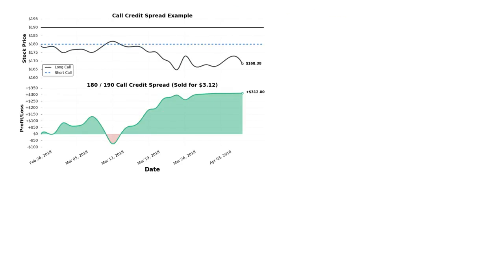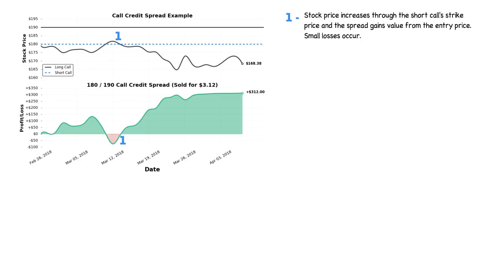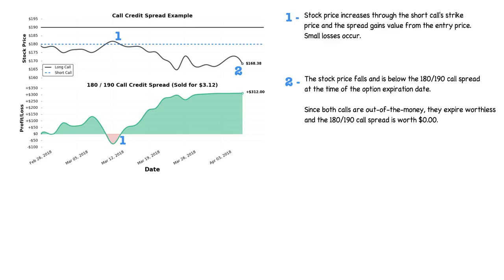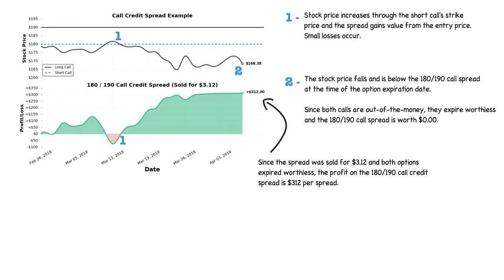Let's look at how this position performed over time. On the top part of the chart, we see the changes in stock price relative to the call credit spread's strike prices, and on the bottom, we see the corresponding profit and loss. The stock price increased above the short call strike price briefly, causing losses, but it did not stay high for very long. After hitting the $180 strike, the stock price fell quickly, and at expiration, shares were at $168.38. Since we sold the $180–$190 call spread, both calls expired worthless, and since we sold the spread for $3.12, the profit per spread is $312.